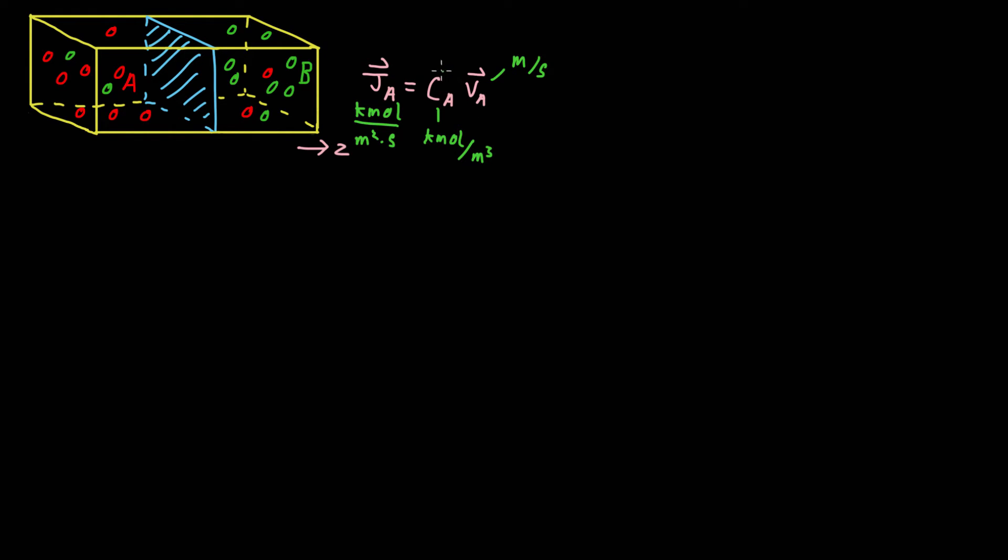This molar density is the molar density of species A in the entire system, in the entire box. For example, if all of the atoms of species A were on the left, then the velocity of species A would be relatively high in the Z direction. But if these atoms of species A were evenly distributed, then this velocity would be zero, and so this flux J_A would also be zero. The molar concentration in both cases, wherever the atoms of species A are, doesn't change. This is the system molar density for species A.